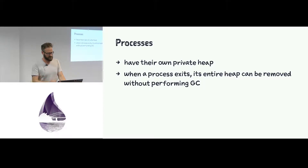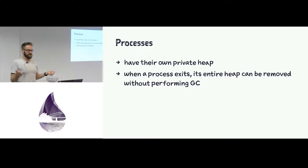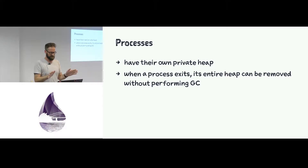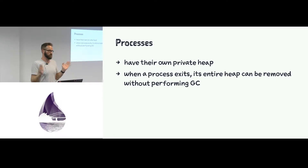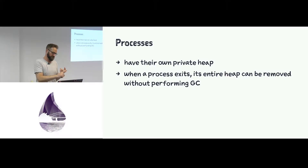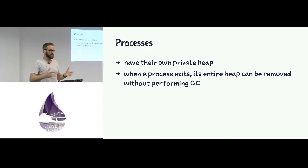In BEAM, processes have their own private heap. Because no data is shared across heaps — with the exception of reference-counted binaries — when a process exits, the entire memory for that process can be killed and cleaned up in one go without doing any garbage collection at all. BEAM already knows that nothing else references it, which means that's super fast. Java can't do that, and neither can .NET — in those systems, the whole VM heap is shared.